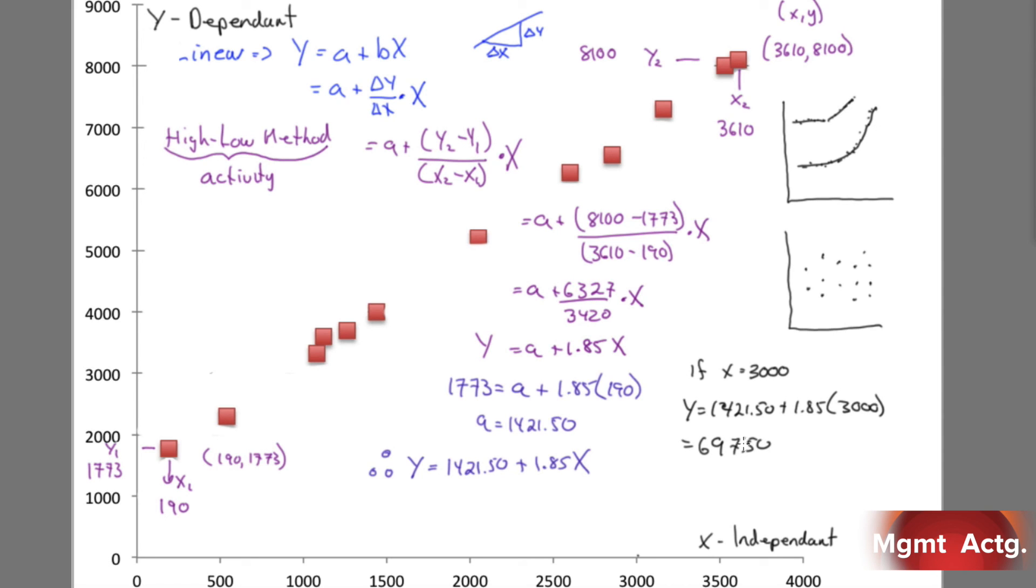So y equals 1421.50 plus 1.85 times our 3000, which will equal 6971.50. So 6971 - I forgot the one. So there's 7000. So we're just a little below that. So if we draw this line out and we draw the 3000 line up, we're right about here. So does that make sense? It certainly does. That is a mixed cost. That's the high-low method.